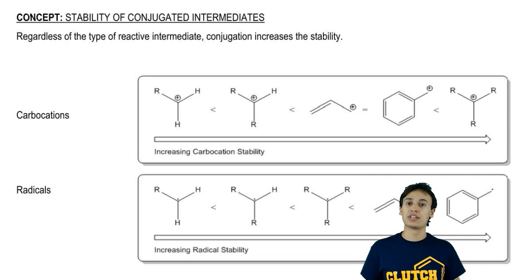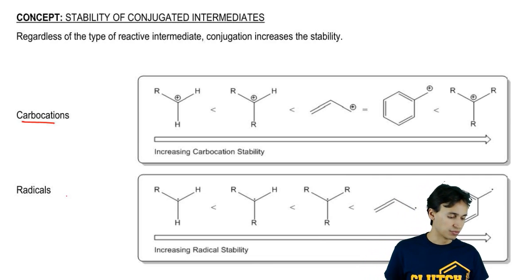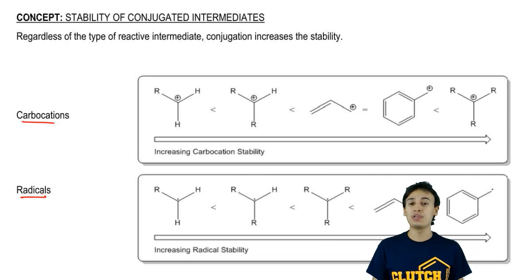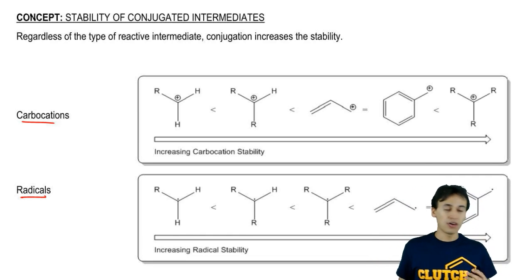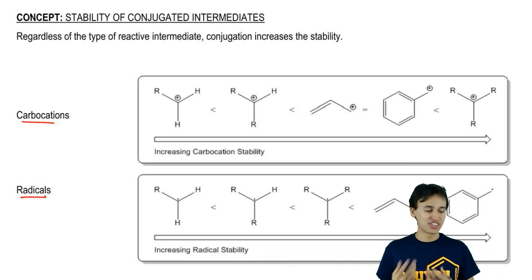We can see this with the trends of carbocations versus radicals. Let's start with the first one, carbocations. We see that obviously primary carbocations are terrible.